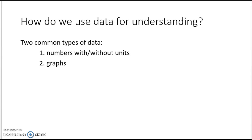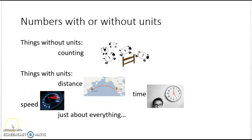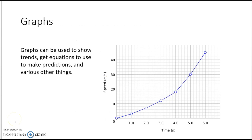One of our best tools in physics for understanding the world is using data. There are two common types: numbers with or without units, and graphs. An example of things without units is counting, such as counting sheep. Examples of things with units are distances, speeds, and time — just about everything — which means anytime you use a number in physics, you're going to have to have units.